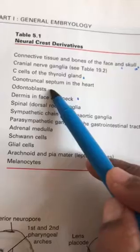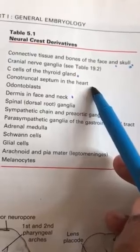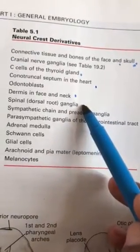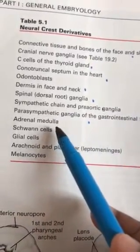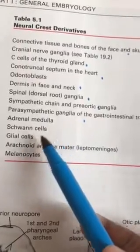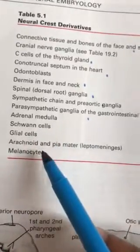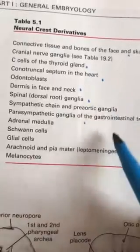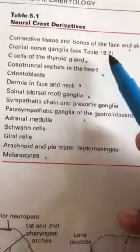Continuing with neural crest derivatives: number six is the conotruncal septum of the heart. Then, coming down to the vertebral column level: dorsal root ganglia, sympathetic chain and ganglion, parasympathetic ganglia. Along with the sympathetic ganglia you should mention the adrenal medulla. Schwann cells are peripheral nervous system derivatives, and glial cells are also included. At the end, arachnoid mater and pia mater are neural crest derivatives, and melanocytes can be added along with the dermis of the face and neck.